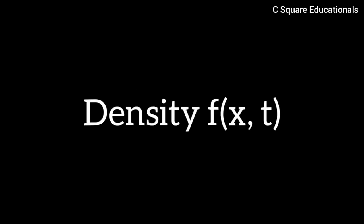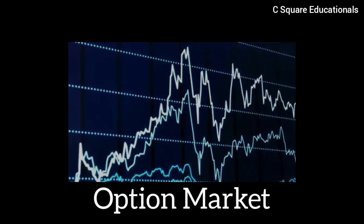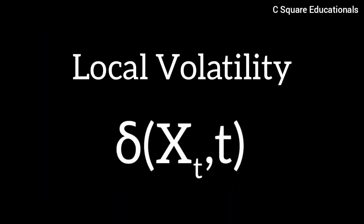The problem is therefore an inversion of the Fokker-Planck equation. Given the density f(x,t) of the option underlying x deduced from the option market, one aims at finding the local volatility sigma(x,t) consistent with f.